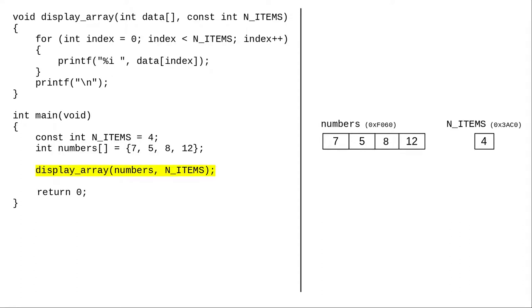What happens when we call the display_array function? Two local variables get created. Let's look at what happens with N_ITEMS first, because it's what we've seen before. The value of the argument is copied into the parameter, which has its own memory address.